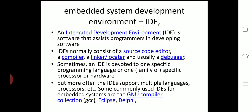An IDE normally consists of a source code editor, a compiler, a linker or locator, and a debugger. An IDE is devoted to one specific programming language, one specific processor, or one specific hardware. But more often the IDE supports multiple languages and multiple processors.